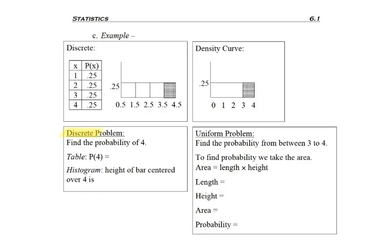Starting over here on the left, for the discrete problem above, I'm asked to find the probability of 4, and there's two ways of doing it. One way I could use the table, and for the table you just come read across and see that the probability in this particular case is 0.25.